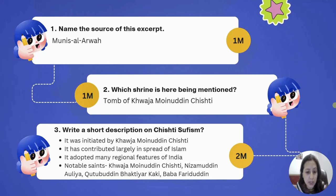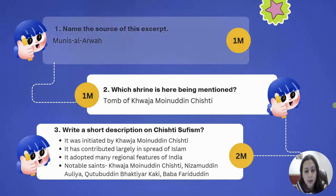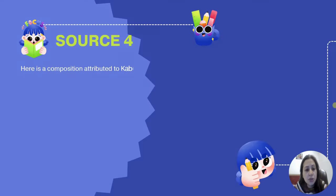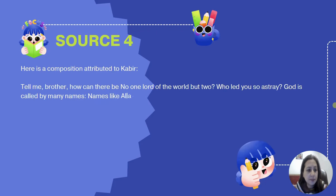Notable Chishti saints include Khawaja Maunuddin Chishti, Nizamuddin Aulia, Kutubuddin Bakhtiyar Kaki, Baba Fariduddin, and Salim Chishti — whom Akbar followed. All of these saints belong to Chishti Sufism.